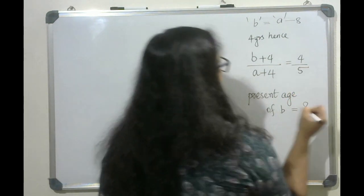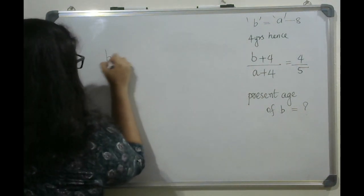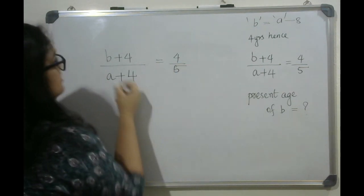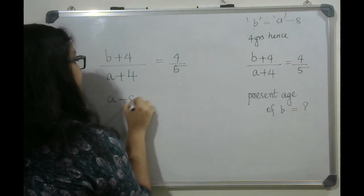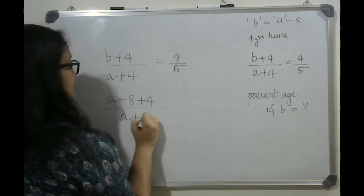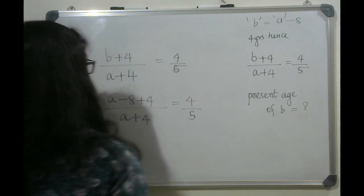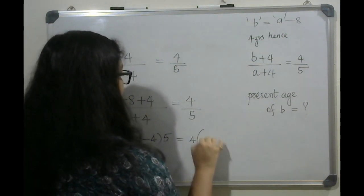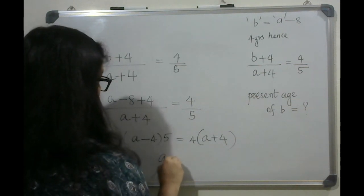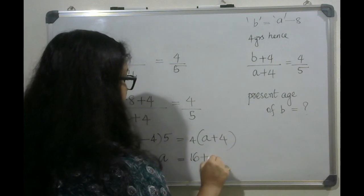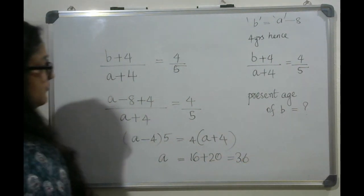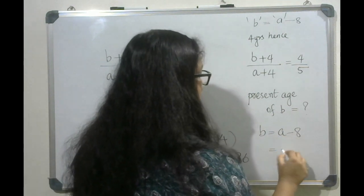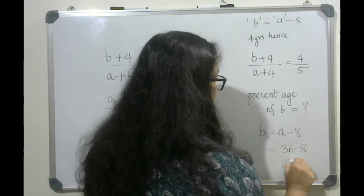What is Bob's present age? From the given data, substituting the values and solving, we need to find the age of B. That equals 36 minus A, which equals 28 years.